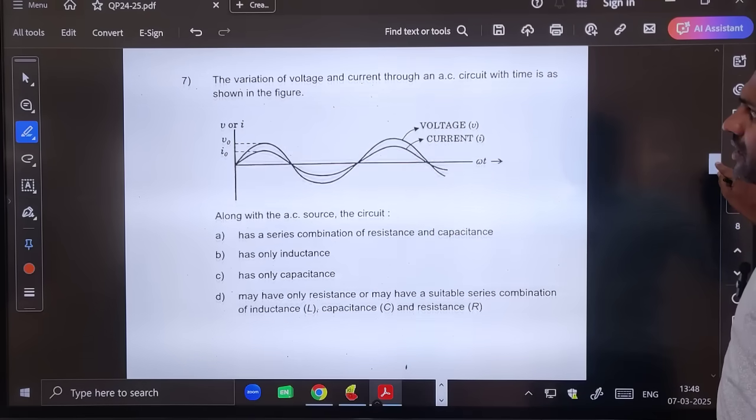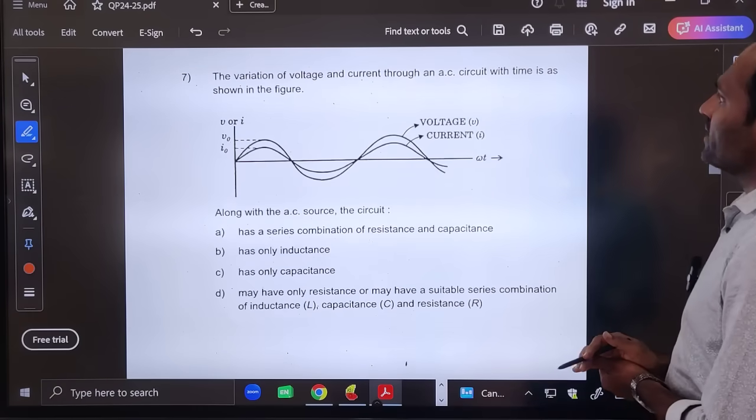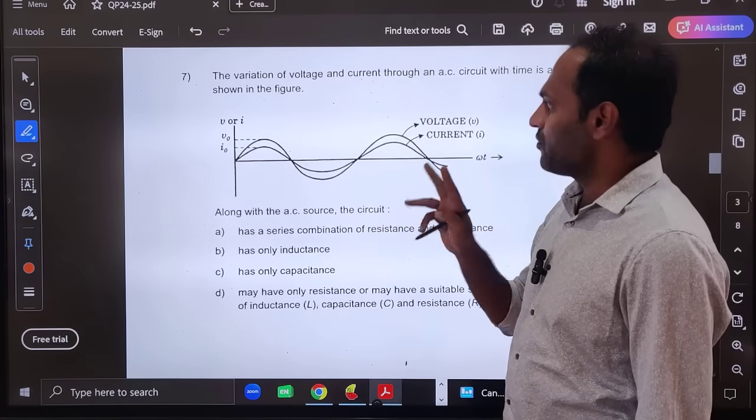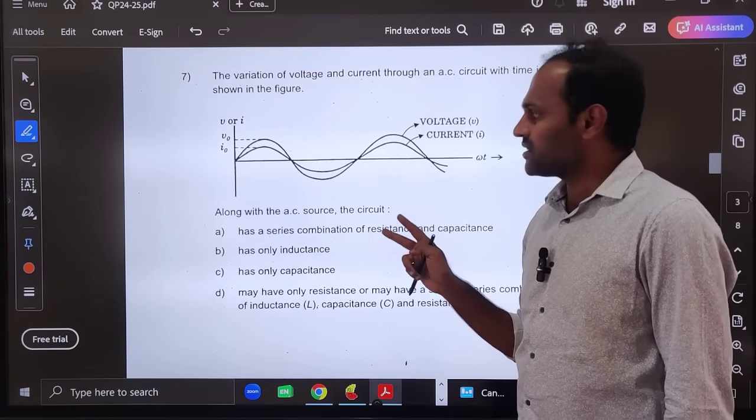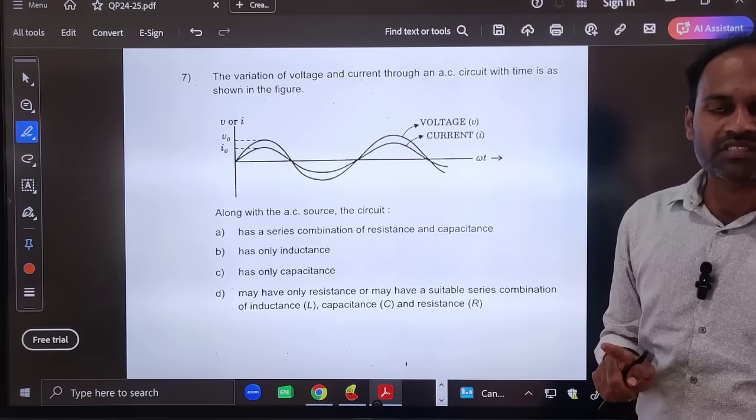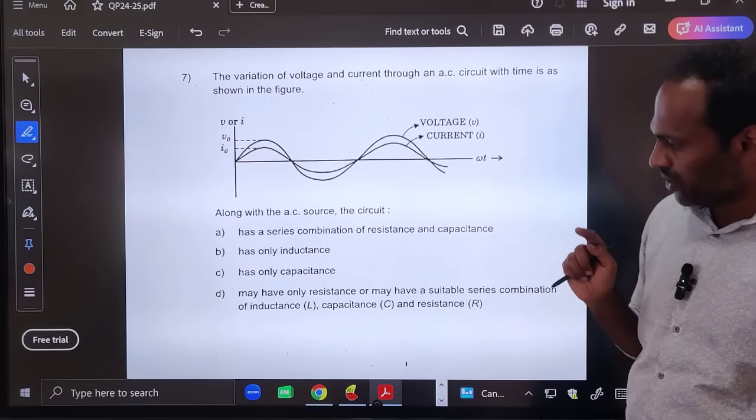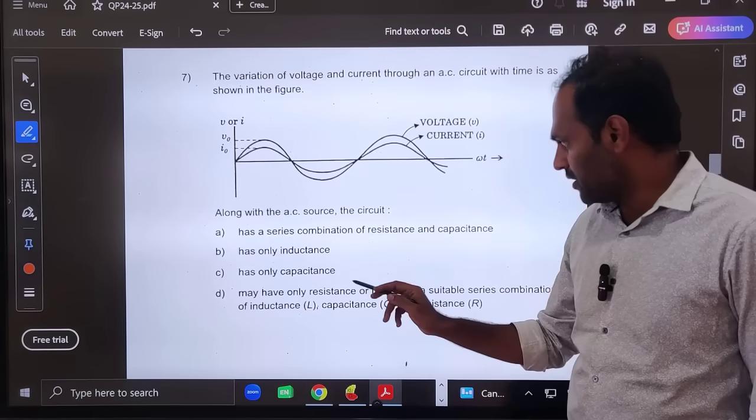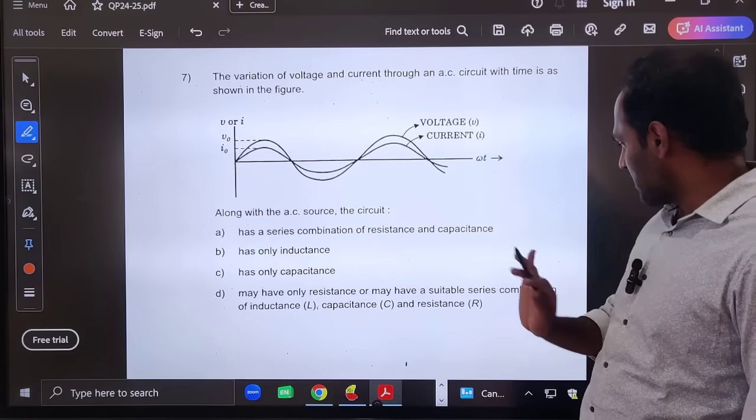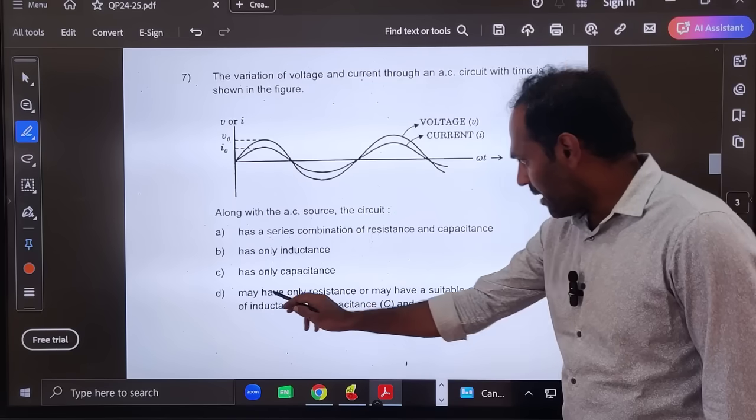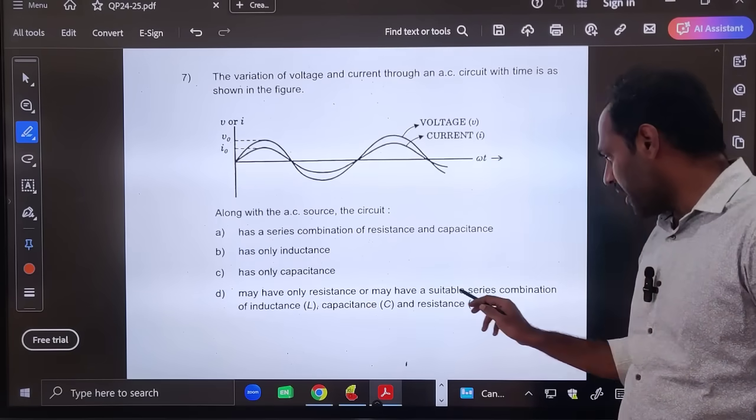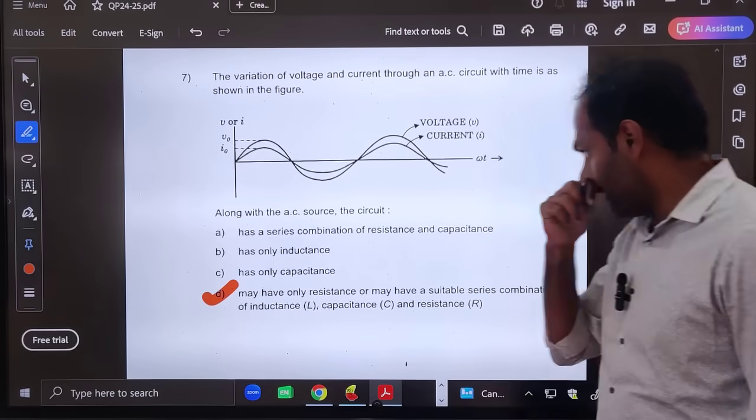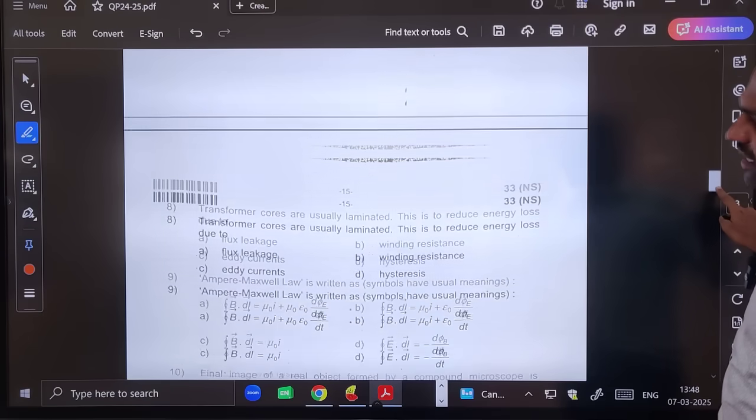Seventh question: The variation of voltage and current through AC circuit with the time is as shown in the figure. See here voltage and current both are in phase, phase difference is zero. If phase difference is zero it has to be a pure resistor circuit or it has to be an LCR circuit in resonance. Because LCR circuit in resonance also acts like a pure resistor circuit. So may have only resistance or may have suitable series combination of inductance, capacitance and resistance. So option D will be correct.